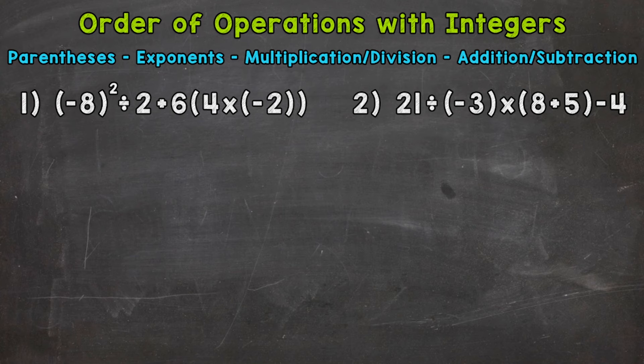Do we have any sets of parentheses within that problem where we have to solve something within the parentheses? Yes, at the end we have 4 times negative 2. Now we do have parentheses at the beginning of the problem around the negative 8, but there's nothing to solve in there. Parentheses around negative numbers help us organize the problem so we don't forget we're dealing with a negative or confuse the negative with an operation. It helps keep us organized.